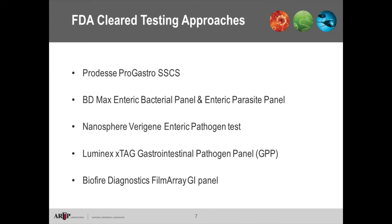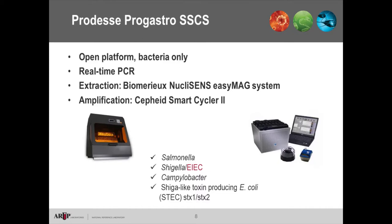There are five FDA-cleared test methods for multiplex GI pathogens currently on the market. The first is the Prodessa ProGastro assay — an open platform that does bacteria only. It's a real-time PCR methodology using separate off-board extraction on a BioMérieux EasyMag and amplification on a Cepheid SmartCycler. This assay detects Salmonella, Shigella, Campylobacter, and Shiga toxin-producing E. coli — the same pathogens detected in a conventional stool culture.